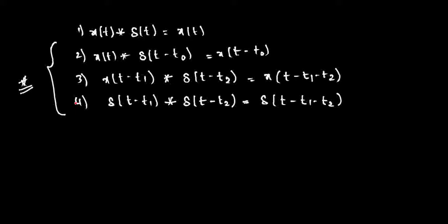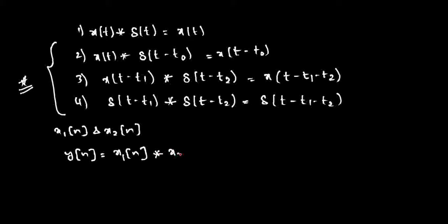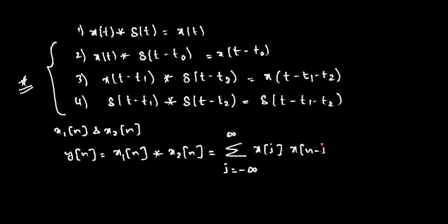How do you represent the convolution of discrete signals? If you have two discrete signals x1 of n and x2 of n, the convolution is y of n equal to x1 of n convolved with x2 of n. You don't have integration here; instead use Sigma from j equals minus infinity to infinity of x of j into x of n minus j.